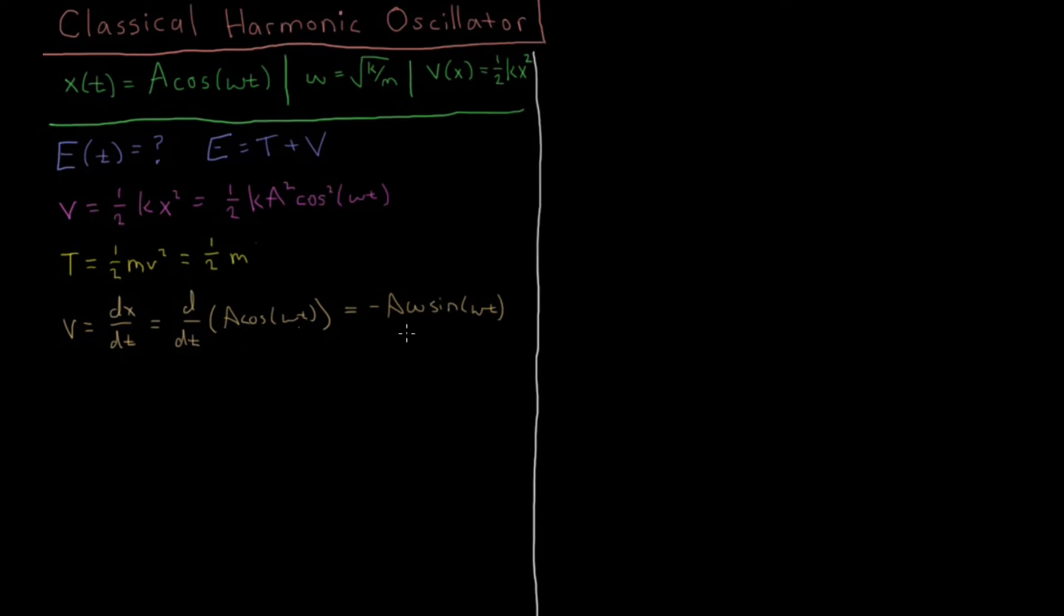we're going to get -Aω sin(ωt). The derivative of cosine is minus sine, and the derivative of cos(ωt) is going to give us, from the chain rule on the inside, another term omega is going to pop out.